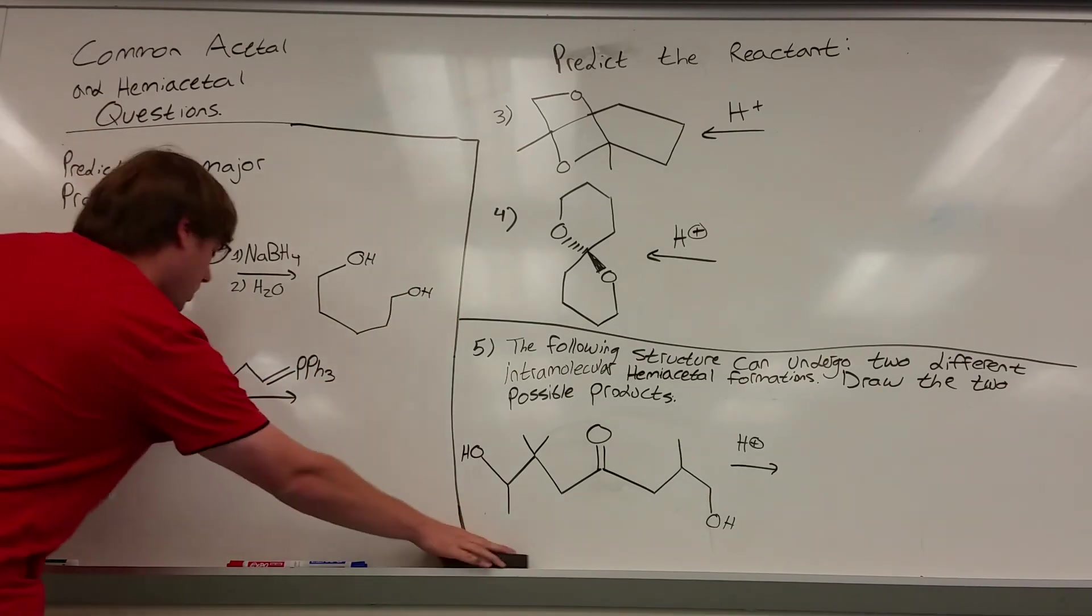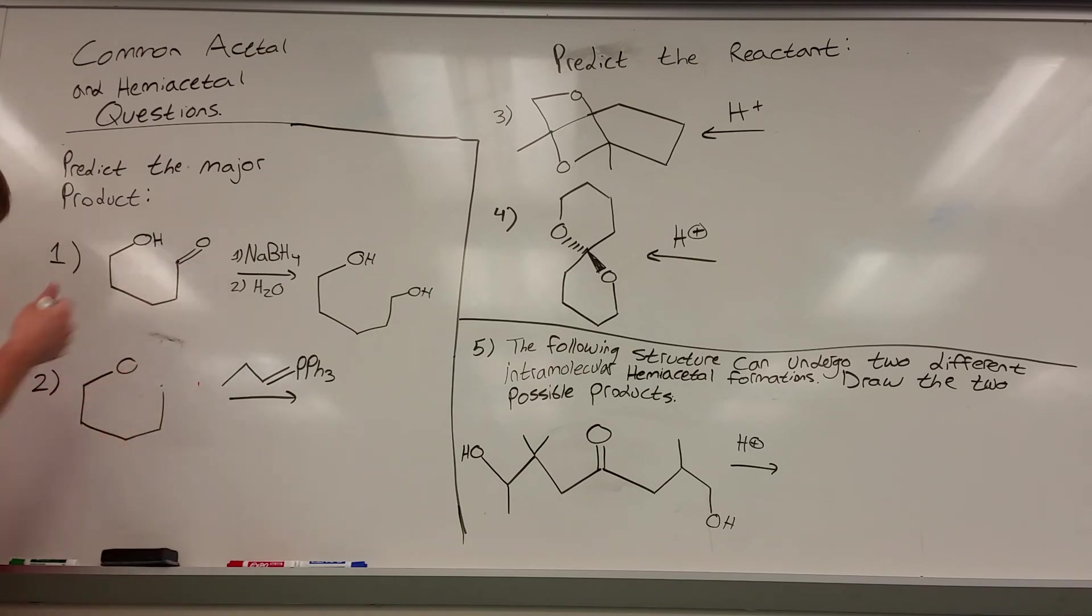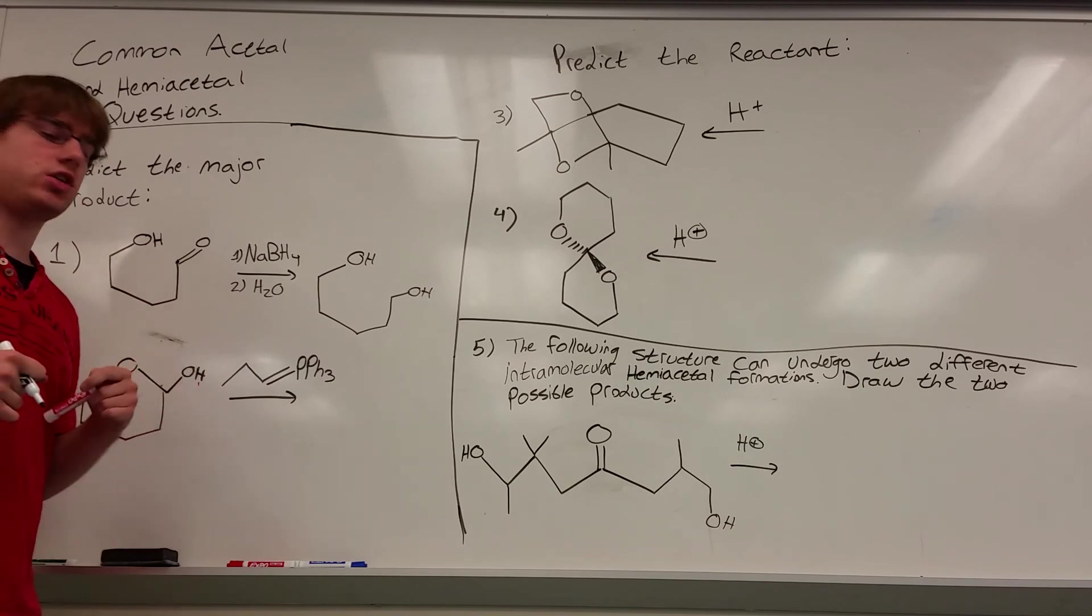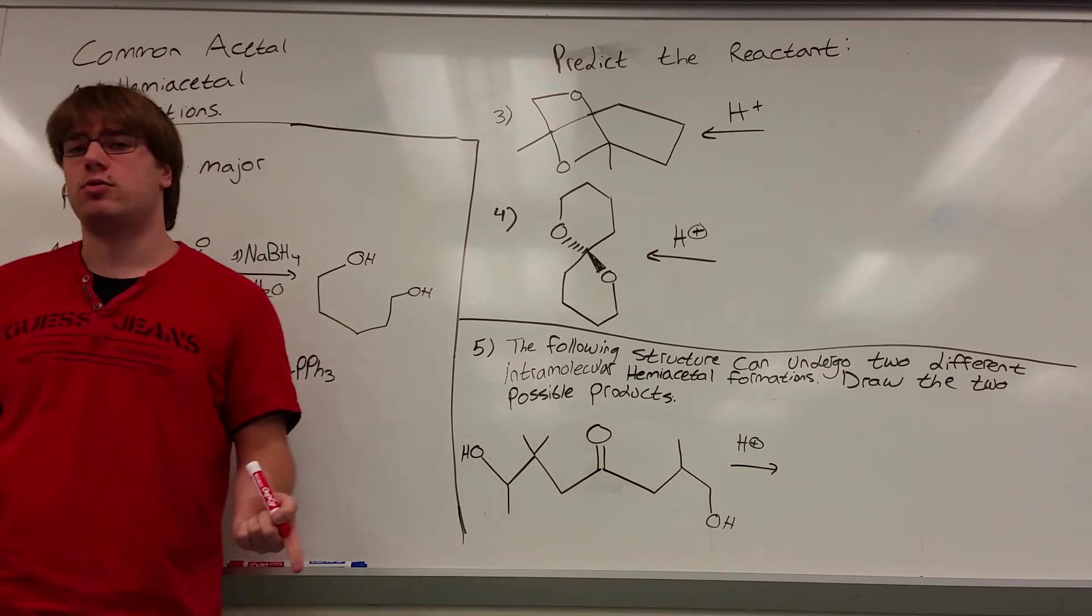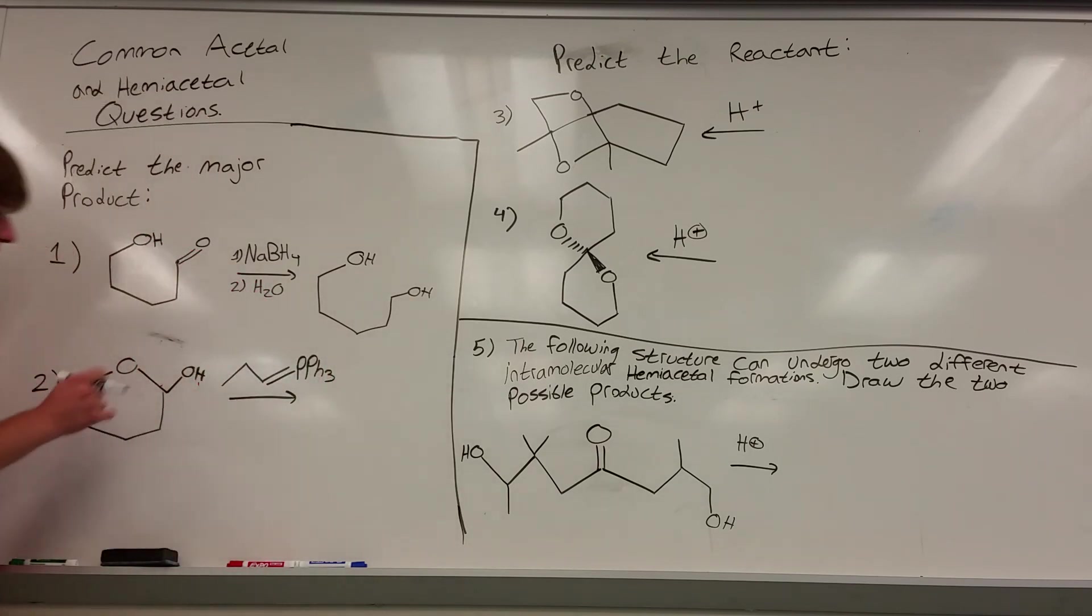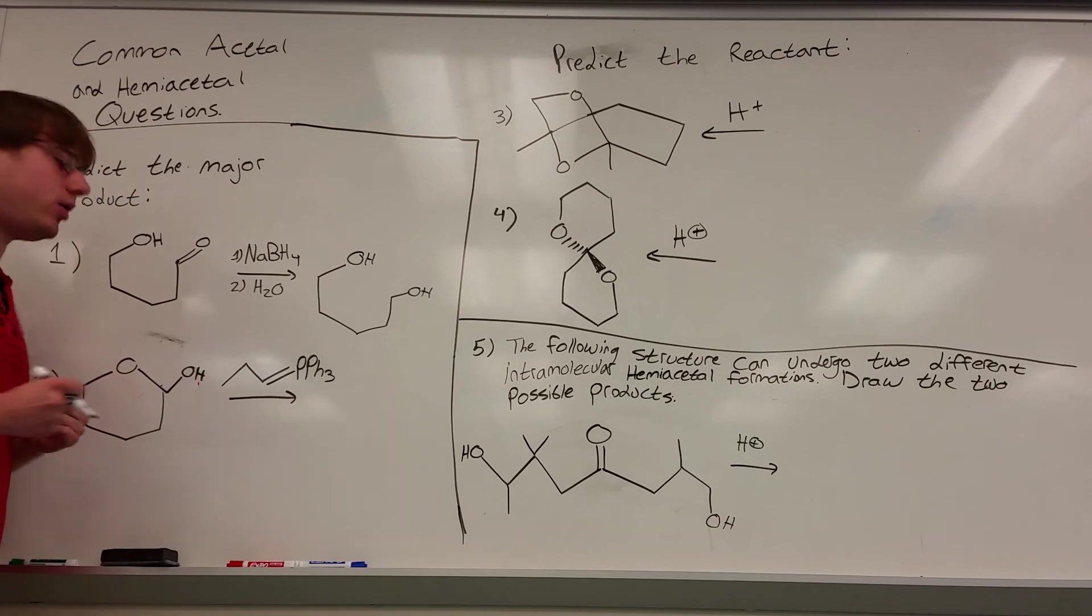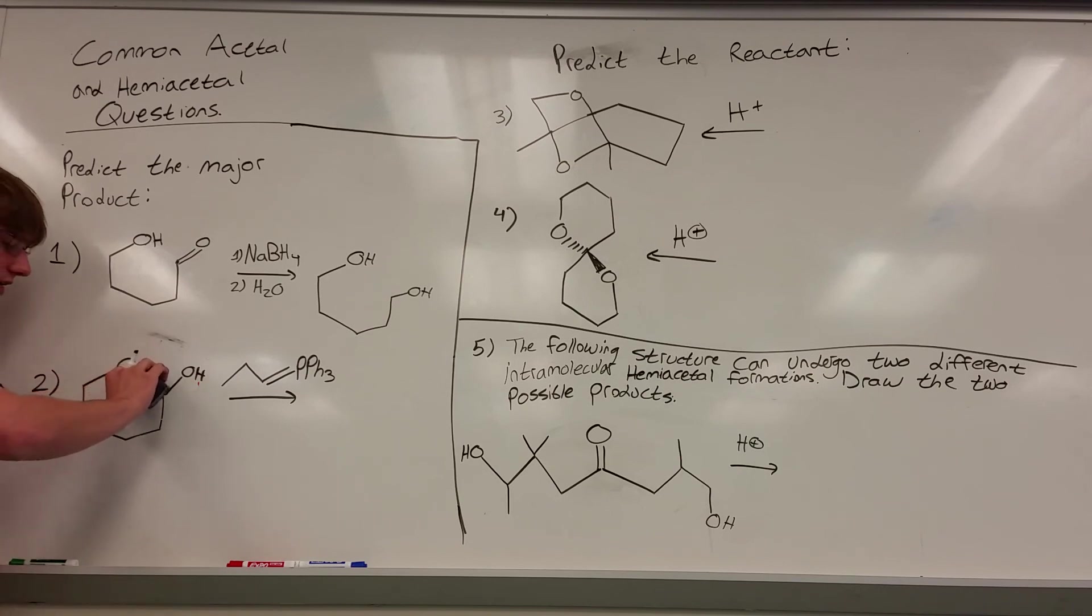Now, for number two, we're kind of in a similar situation to what we were in for number one. Namely, we started off with a hemiacetal. But again, what do we have over the arrow this time? This is our Wittig reagent. This reagent, much like NABH4, only reacts with double bond O's. We don't have a double bond O, but we know that hemiacetals are constantly cycling back into double bond O's. So once again, what you'll do is find the carbon that is your hemiacetal carbon, erase the bond that connects the oxygen of the ring to that carbon, and make that former oxygen of the ring into an OH. The other OH that was sticking off of the ring will now become double bond O without its hydrogen.